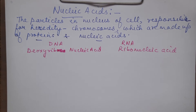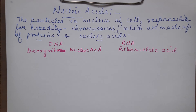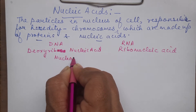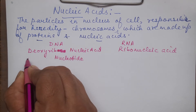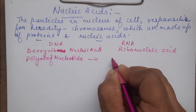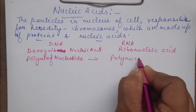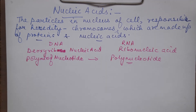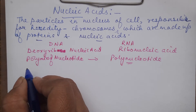Ribose is the sugar which is present in them, and on that basis we are naming them. These nucleic acids are long chain polymers — they are polymers of nucleotides. So we also call them polynucleotides.